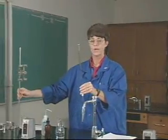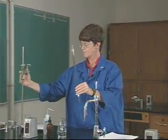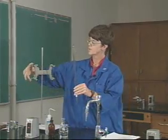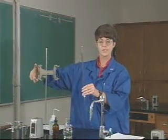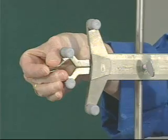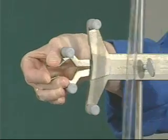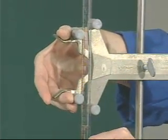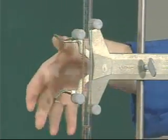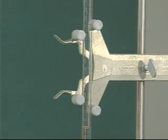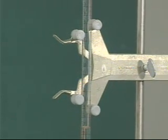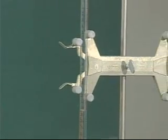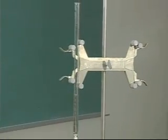The burette clamp is new to you, but not difficult to use. You simply squeeze together these two pieces and that brings the holders apart. You can then put the tube of the burette there and gently let those two parts go, and the burette will be securely clamped for use in the experiment.